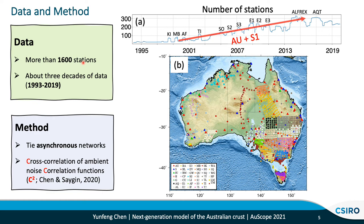We'd like to address some of these challenges with improvements in both data and methodology. Thanks to the community effort and the AUSCOPE project, the number of stations increased dramatically over the years, from less than 100 in early 2000 to about 300 in recent years. Among these networks, those from AU and S1 formed the backbone array. The figure shows the station distribution from various networks used in this study, which contains more than 1,600 stations and about three decades of seismic data. In terms of methodology, we tie asynchronous networks with a recently proposed higher-order ambient noise imaging workflow based on the cross-correlation of ambient noise correlation functions. Because it involves two cross-correlation operations, we also name it the C2 method.